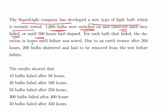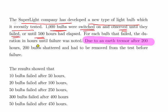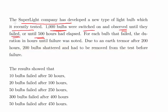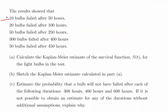For each bulb that failed, the duration in hours until failure was noted. A note about censoring: due to a nearby earth tremor after 200 hours, 200 light bulbs shattered and had to be removed from the test before failure. The failure data is as follows: 10 light bulbs failed after 50 hours, 20 after 100 hours, 50 after 250 hours, 300 after 400 hours, and 50 after 450 hours — essentially split into 50-hour periods.